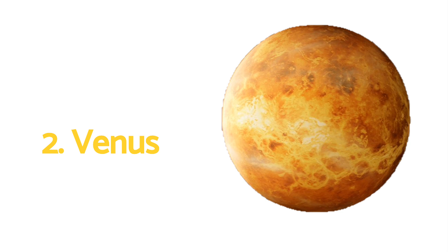Venus. This is Venus. What planet is this? This is Venus. Yes! Venus is the second planet from the Sun and the hottest planet in our solar system. The planet Venus is known as the morning star when it appears in the east before sunrise.